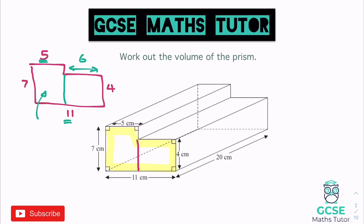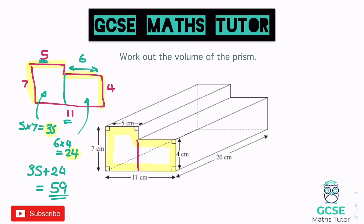Now we can work out the area of those two shapes. The rectangle on the left has sides 5 and 7, so 5 times 7 gives us an area of 35. The rectangle on the right now has our found length of 6 going across and 4 going down, so 6 times 4 is 24. We now have our two areas, and we want the combined area for the cross section, so 35 plus 24 gives us a total cross-section area of 59.